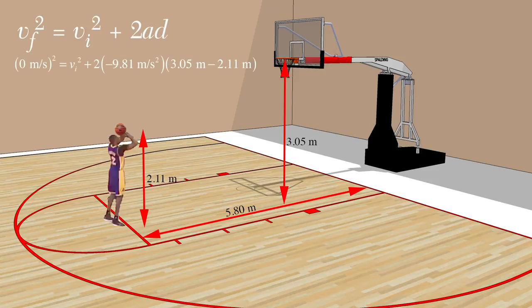We can plug in what we know to find out what we don't know. After solving, we can get to the conclusion that velocity initial in the y direction equals 4.29 meters per second.